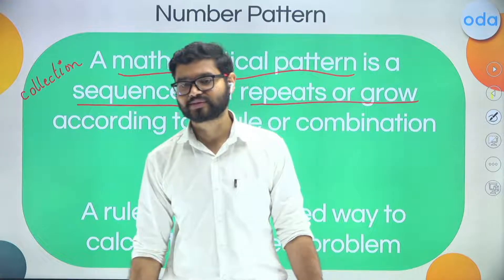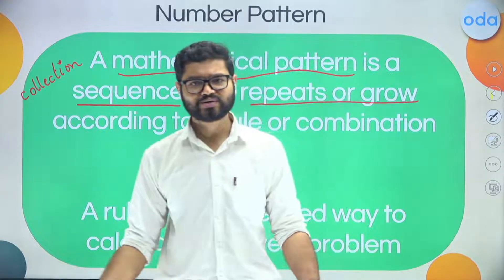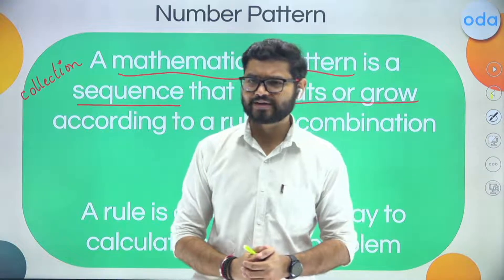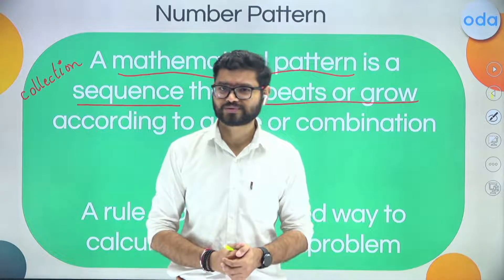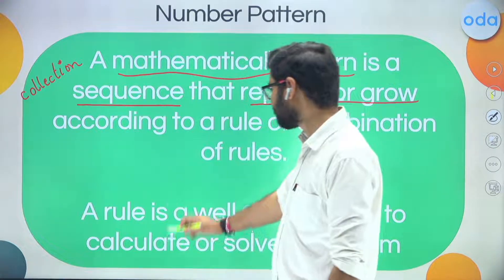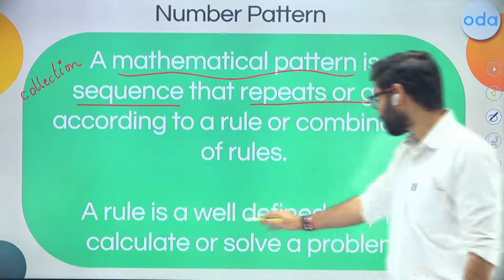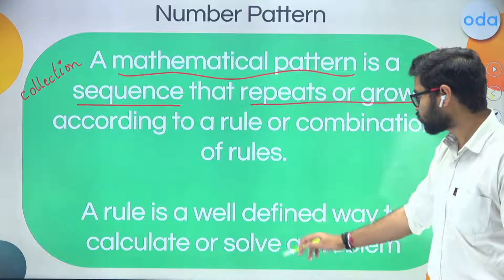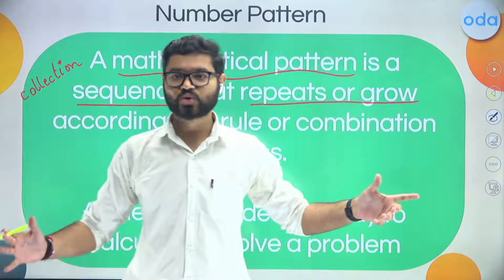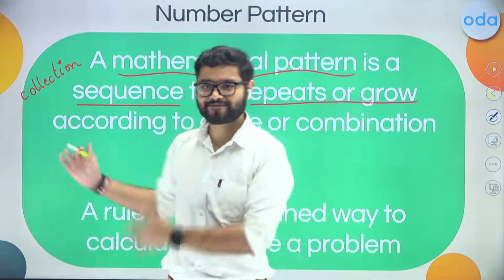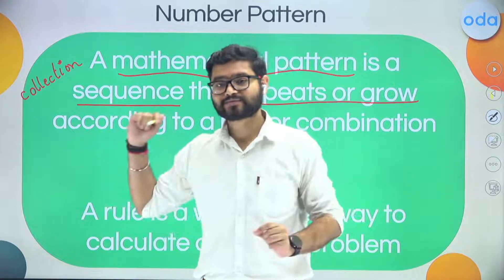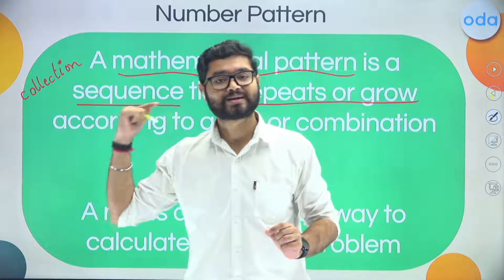Definitely there will be some rules. We have rules everywhere — rules in school, rules to attend ODA sessions, rules in cricket. Over here also you are going to find some rules. A rule is a well-defined way to calculate or solve a problem. Let's not drown in definitions — let's take it real slow because once I teach you the topic, it is going to become super easy for you.